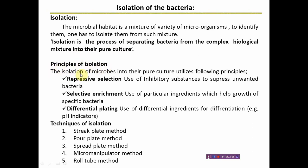The principles used for isolation include repressive selection, selective enrichment, and differential plating. Repressive selection involves the use of inhibitory substances in the composition of culture media to suppress unwanted bacteria. Selective enrichment involves the use of particular or special ingredients which will help the growth of specific bacterial cells only.